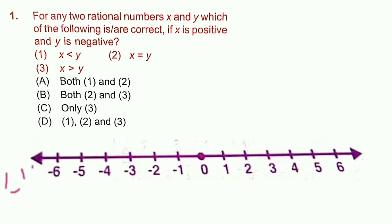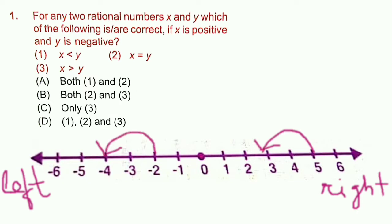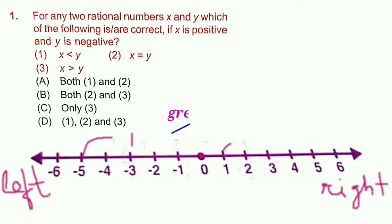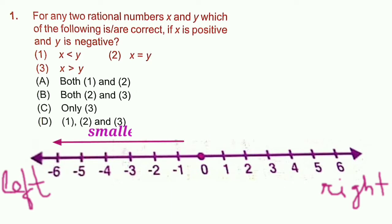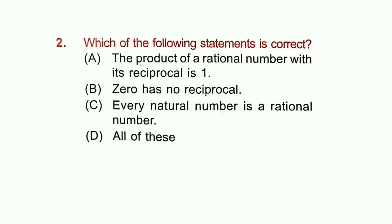On a number line, a number to the left of another is always smaller, and a number to the right is always greater. All negative numbers are to the left of positive numbers, so negative numbers are smaller than positive numbers. Since y is negative and x is positive, x is greater than y. Option C (only statement 3) is correct.